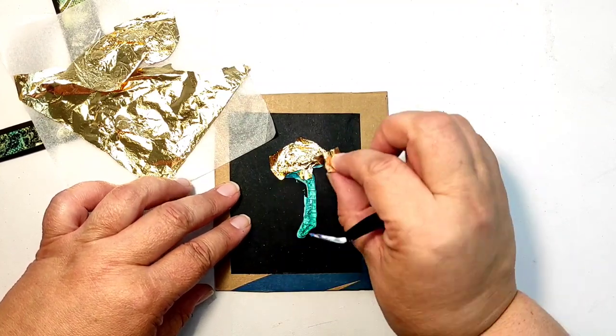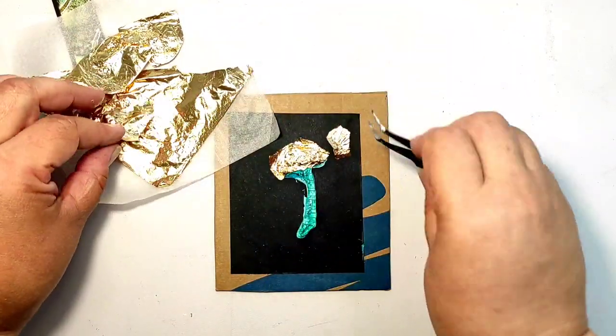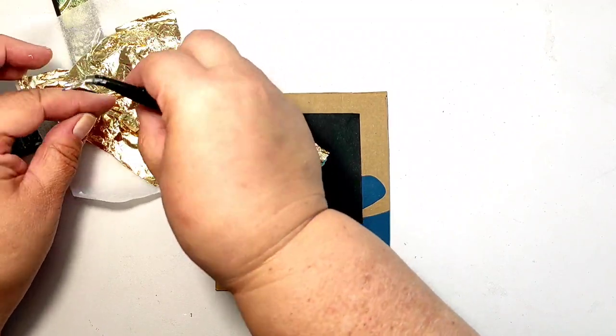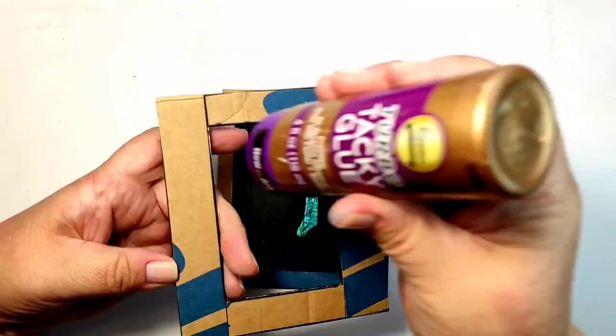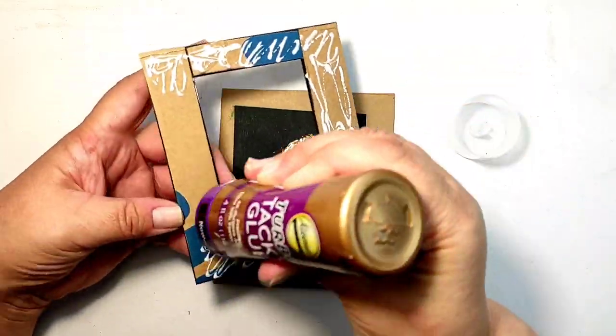Ta-da! We are using gold leaf to go in between the cracks. I want the turquoise color still to be visible. The glue needs to dry and that gives me time to glue the frame to the base.